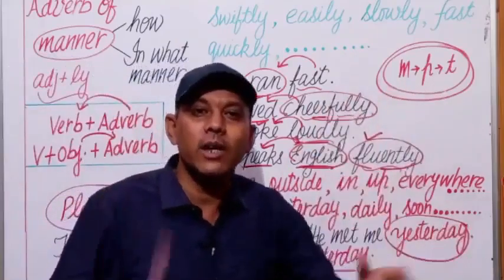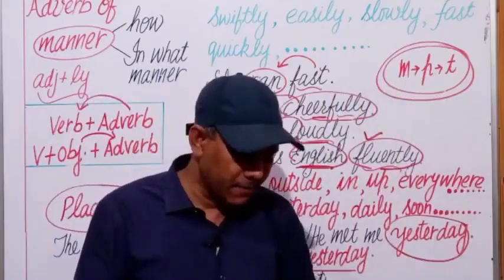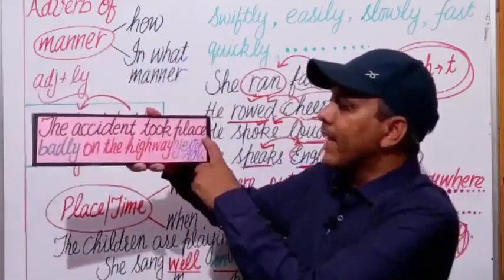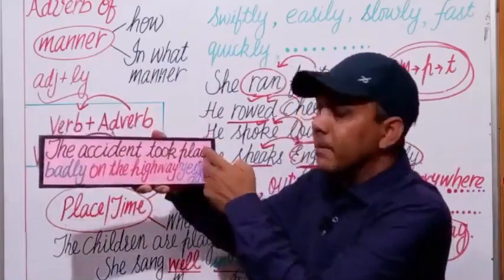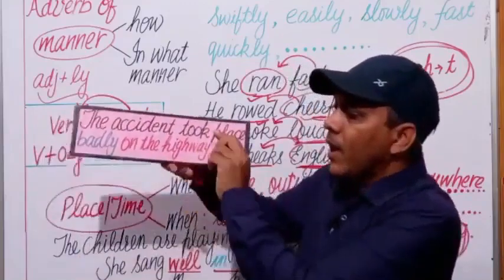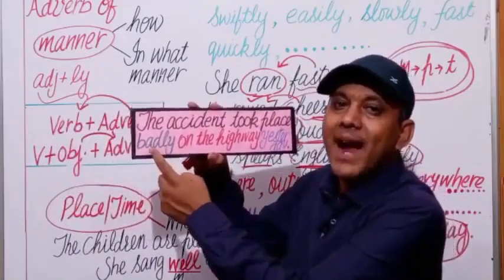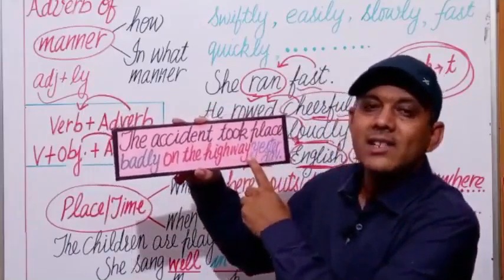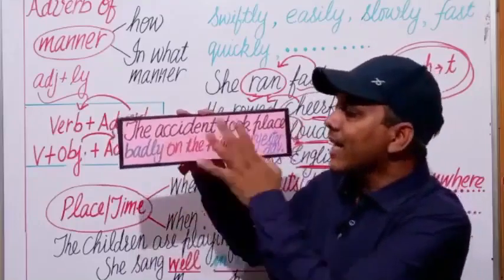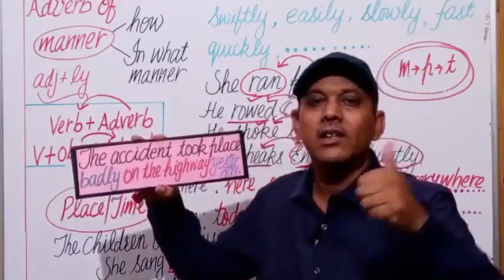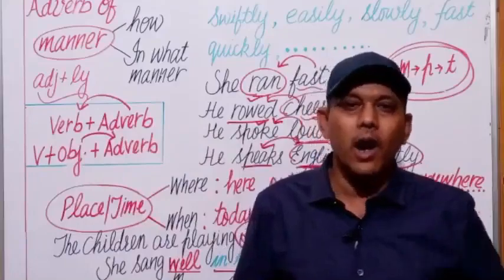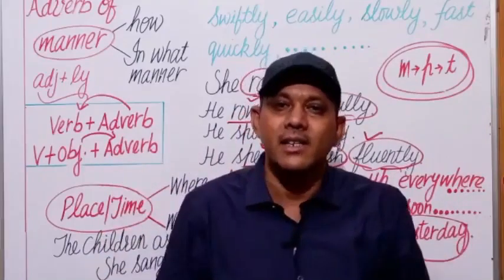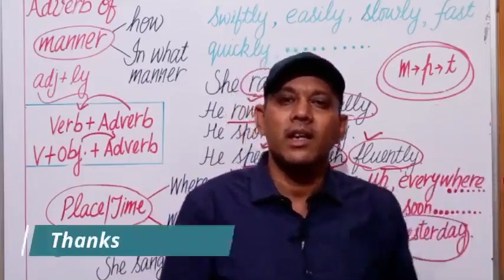This is known as the order of adverbs in a single sentence. Another example: 'The accident took place.' How? Badly. Where? On the highway. When? Yesterday. So: 'The accident took place badly on the highway yesterday.' In this way, we can use adverb of manner, adverb of place, and adverb of time collectively in a single sentence following the order M-P-T. Thank you very much.